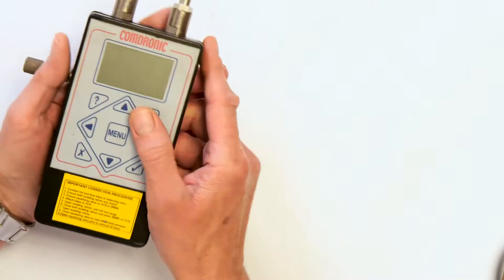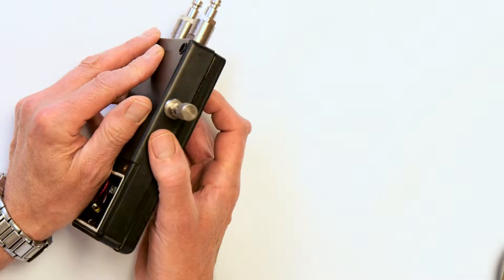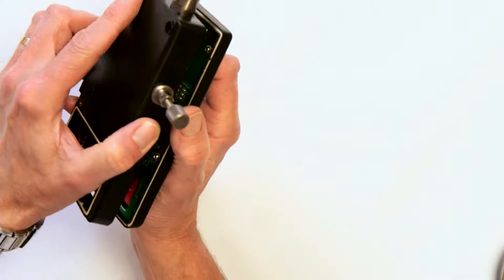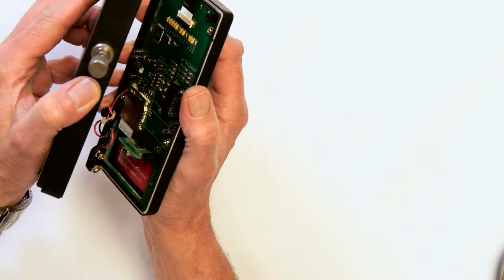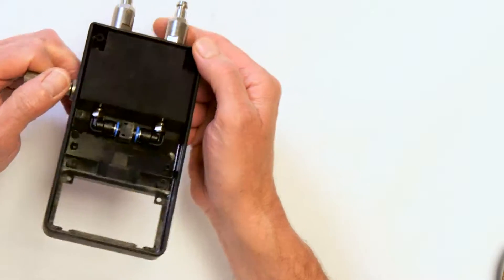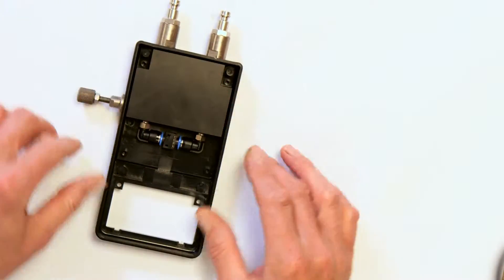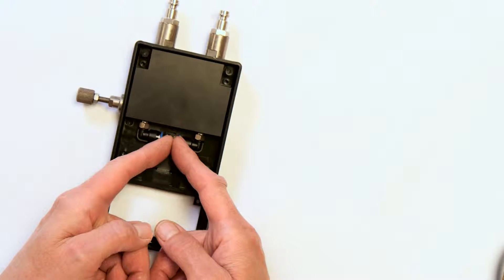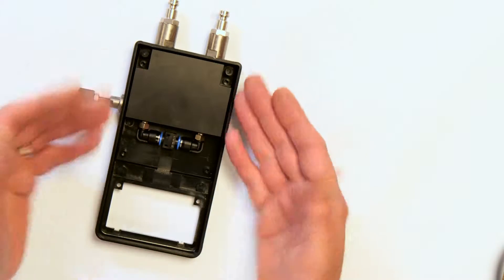So on this unit, the retaining screws have been removed. We're going to separate the unit now from the PCB. Put the PCB to one side, we don't want that anywhere near the wet end at the moment or any of the wet parts, which leaves us with the actual wet end of the unit, showing the sensor, sensor connectors and the valve block.